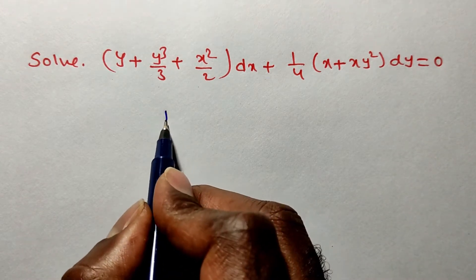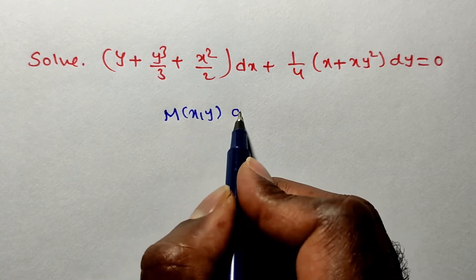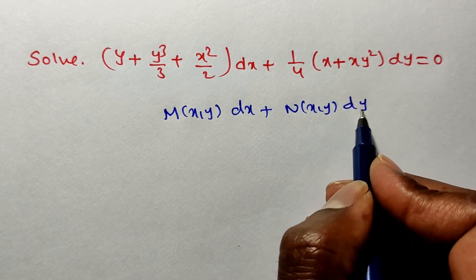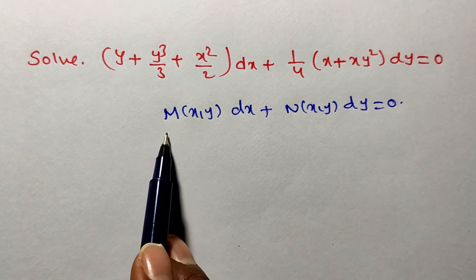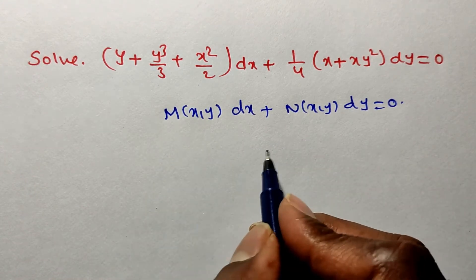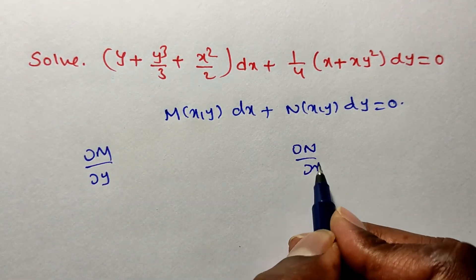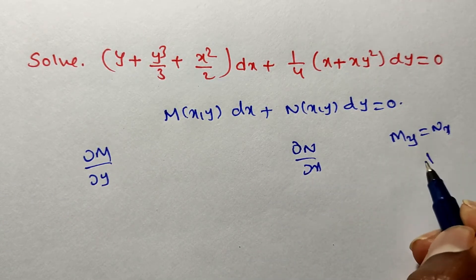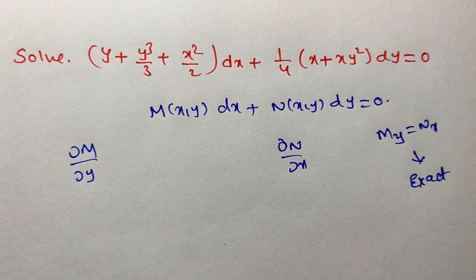By observation, we can say the given problem is in the form M(x,y)dx + N(x,y)dy = 0. You remember: if the given differential equation is in the form M dx + N dy = 0, we have to find ∂M/∂y and ∂N/∂x. If ∂M/∂y equals ∂N/∂x, then the given differential equation is an exact differential equation.